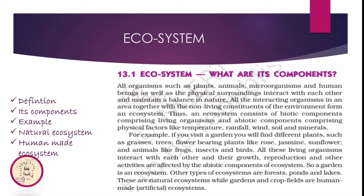Natural Ecosystems include forests, ponds, and lakes. Whereas Artificial Ecosystems include crop fields and gardens — these are man-made, which is what makes them artificial.